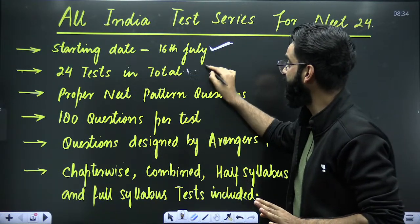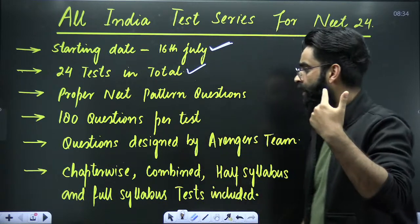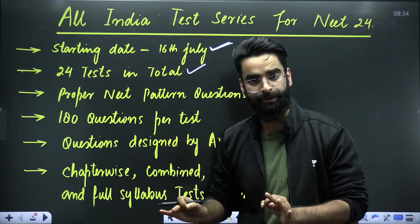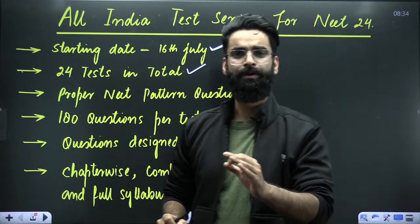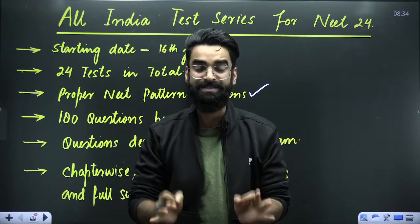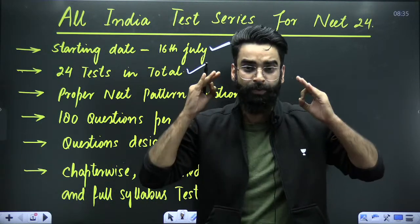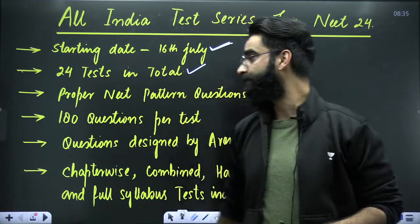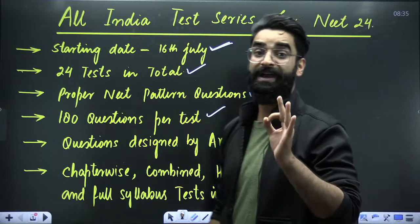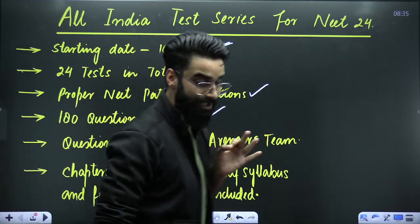Now dear students, in total there will be 24 tests — 24 tests you will be writing with us in the upcoming 6 months. All the questions which will be in these tests are absolutely going to follow the proper NEET pattern. There will not be a single question whose level is going to be below NEET or above NEET. All the questions are designed by us — in physics, chemistry, as well as biology. Every test will contain 180 questions, the same way you have the NEET examination.